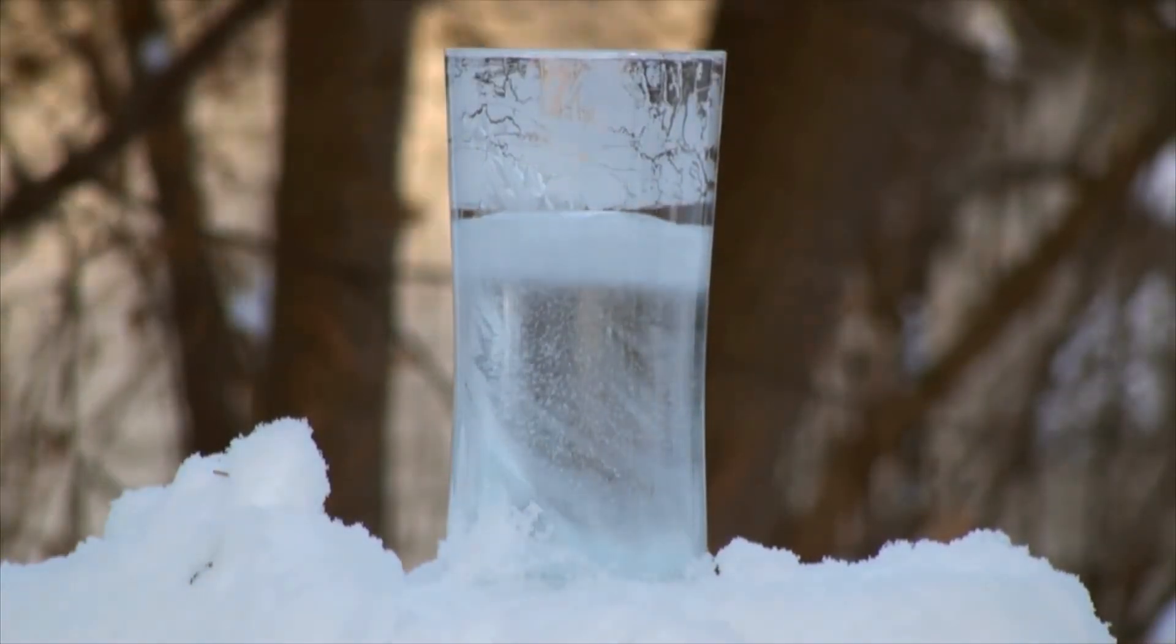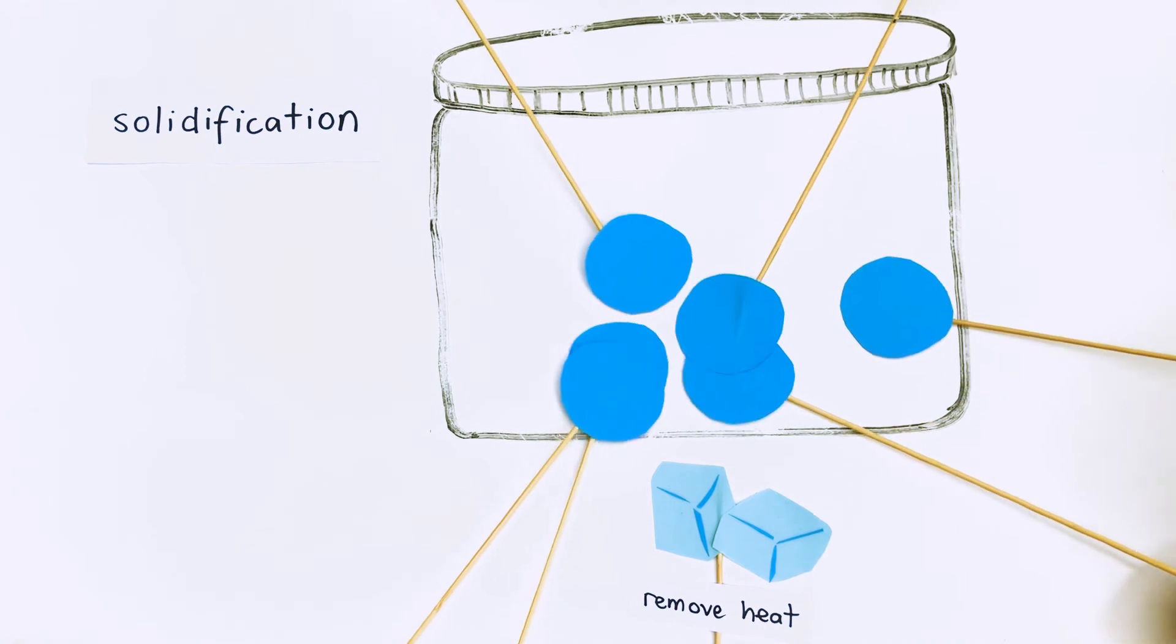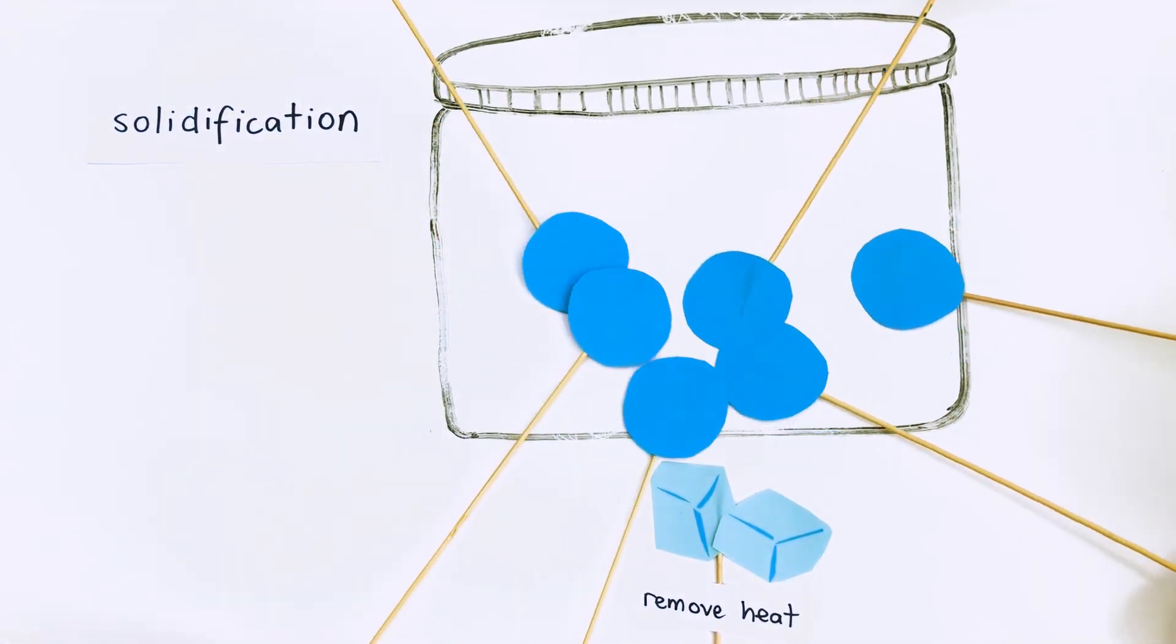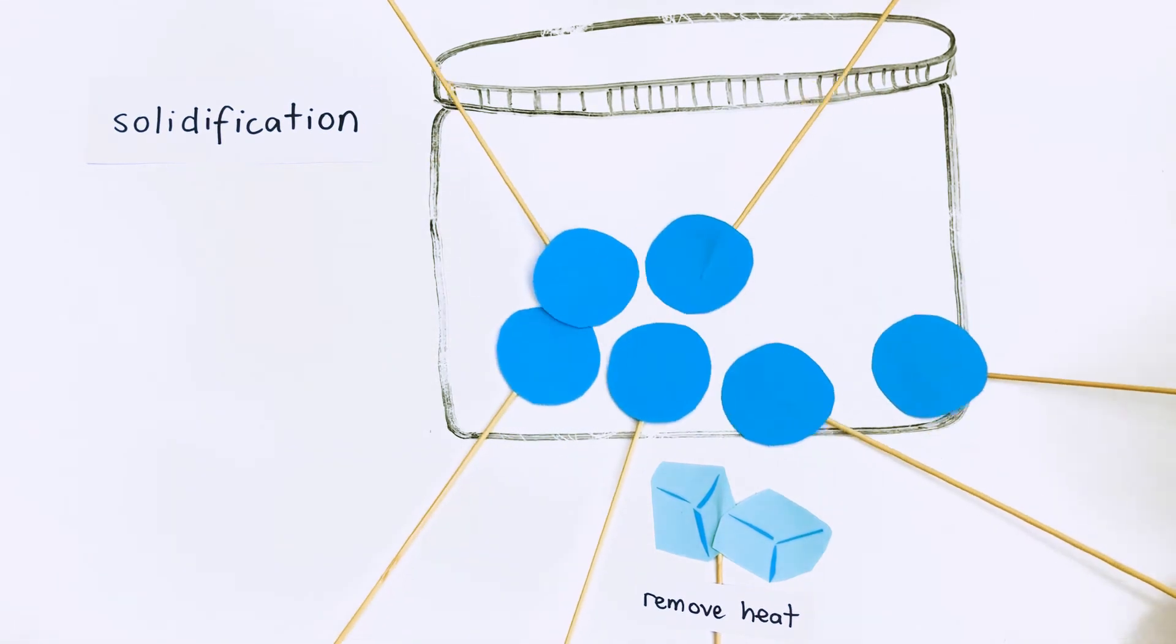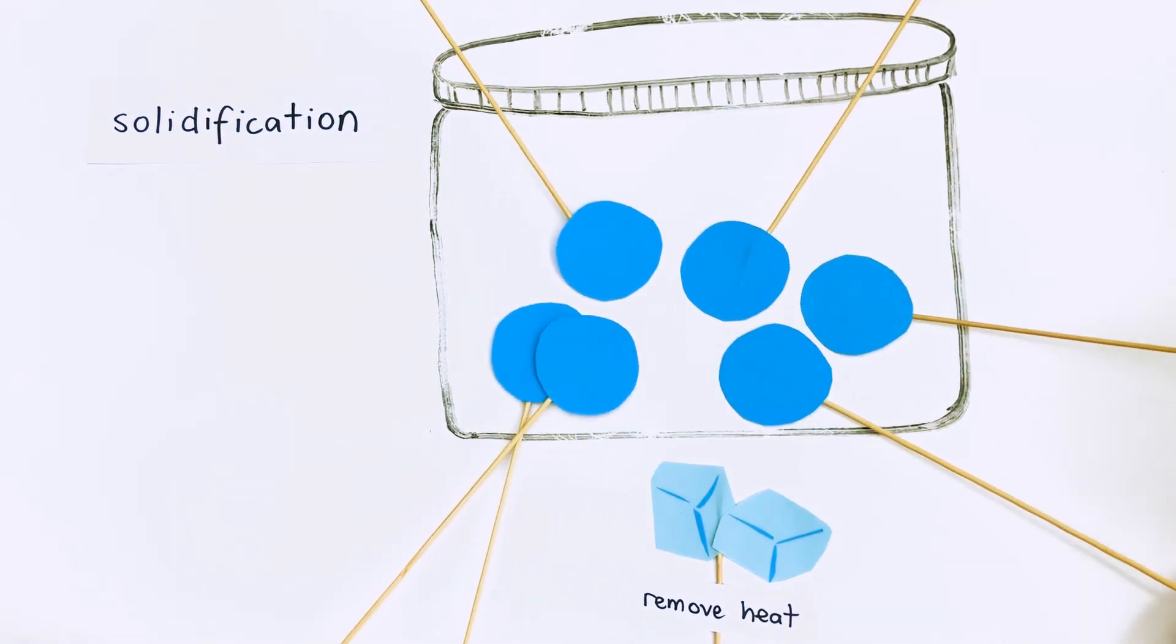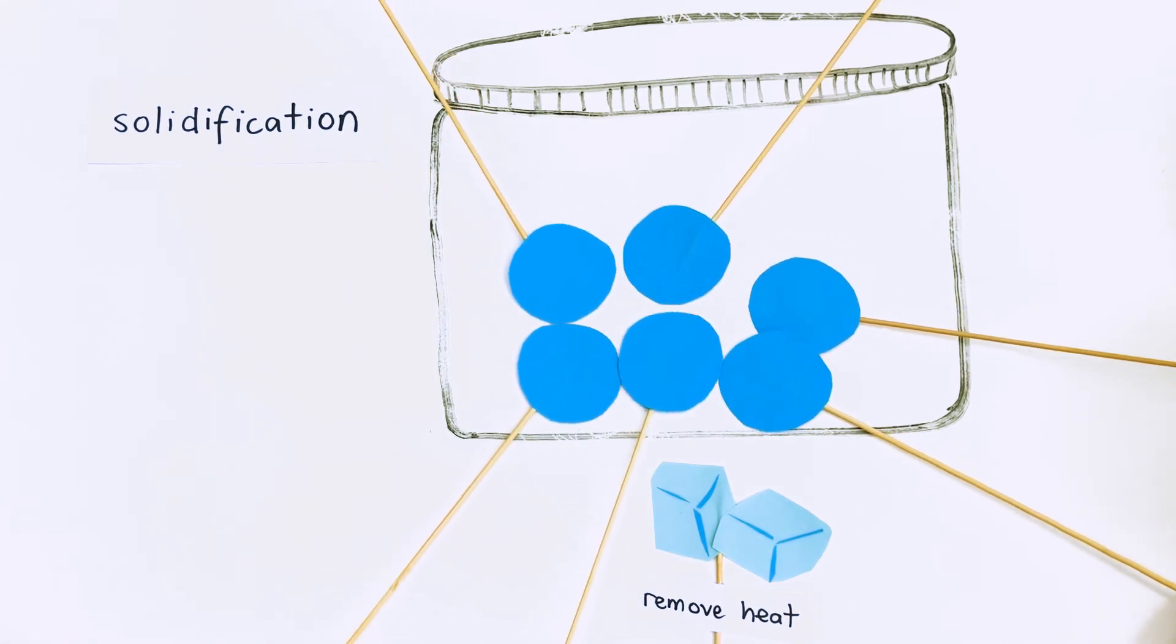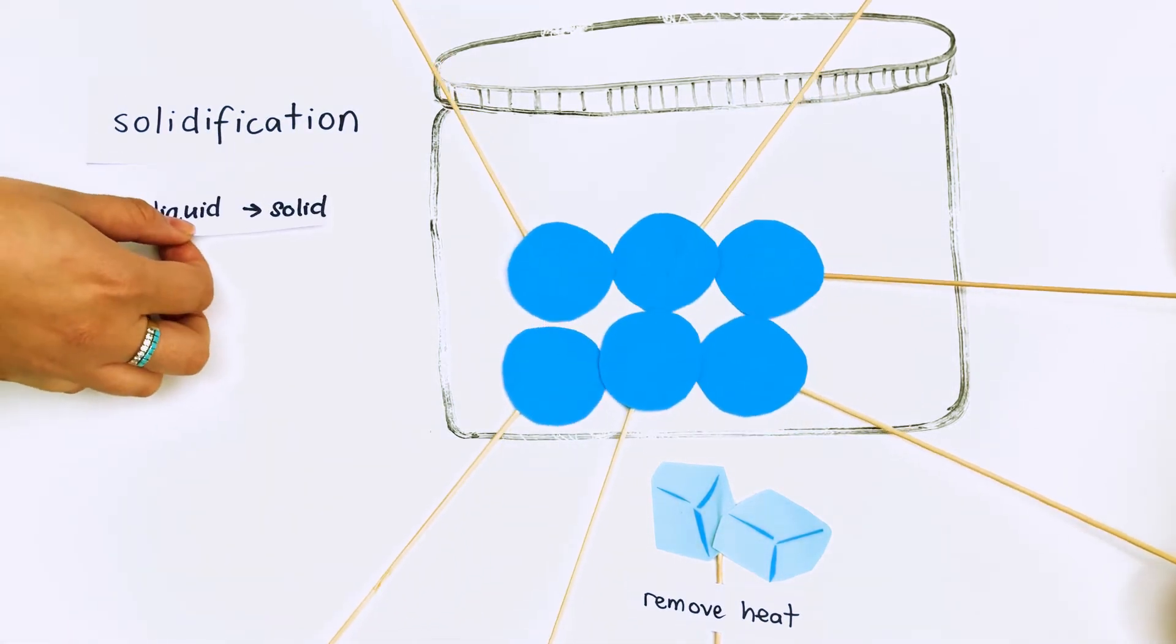Solidification. Solidification happens because particles in the liquid slow down and vibrate less. Eventually the particles slow down enough that they stick to the particles around them. This holds them in fixed positions. The liquid has turned into a solid.